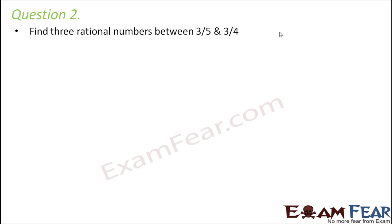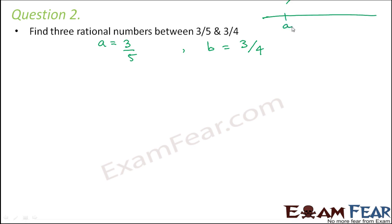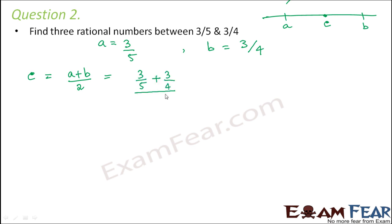Question 2: Find 3 rational numbers between 3/5 and 3/4. We follow the same approach with A = 3/5 and B = 3/4. Calculate C, the mean of A and B: C = (3/5 + 3/4) / 2 = (1/2) × (12 + 15)/20 = 27/40.